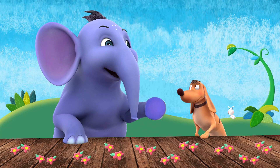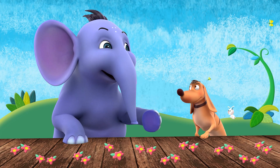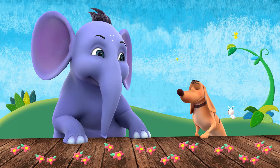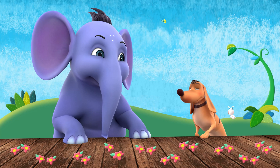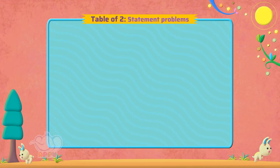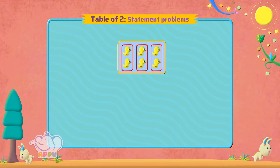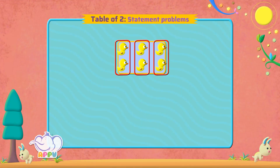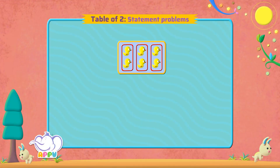Let's do some practice of the two times table. There are two ducks in three groups. How many ducks are there altogether?